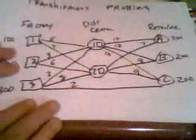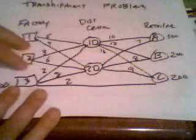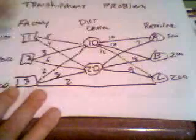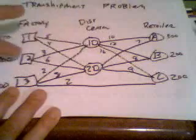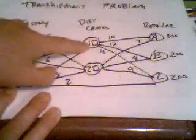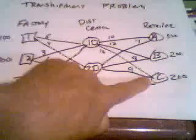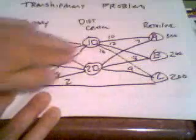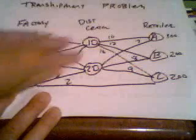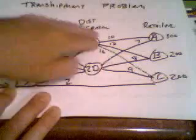We also need to include what's known as the balancing constraints. Why do we need those? Well, that is whatever goes into a distribution center must come out. So X_11D plus X_21D plus X_31D has to be equal to X_1DA plus X_1DB plus X_1DC, so that whatever goes in comes out. If we don't include that constraint, what could happen is you could actually ship some in there and then not ship it out of there. This forces it to be balanced.